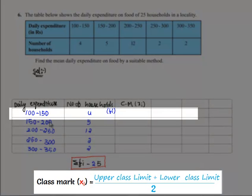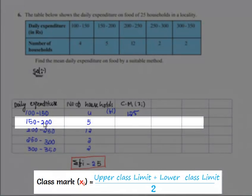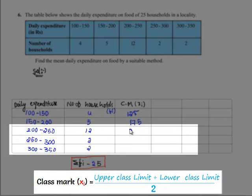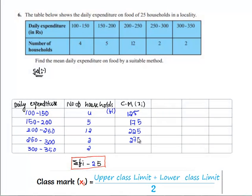Hence 100 plus 150 by 2 gives 125. Then 150 plus 200 by 2 gives 175, and similarly if we calculate we get 225, 275, and 325.